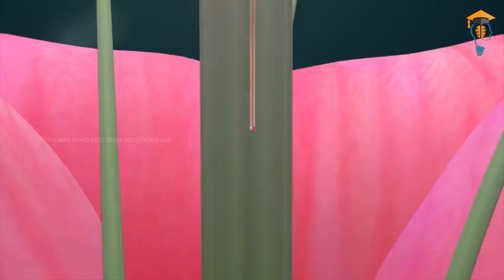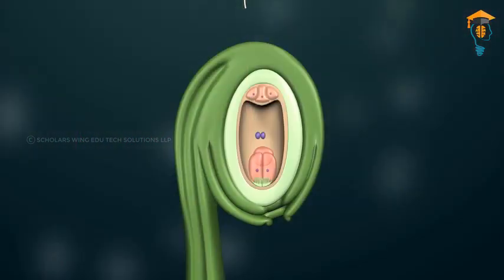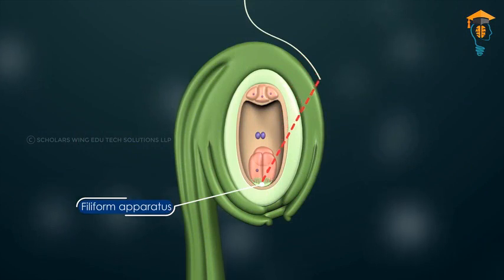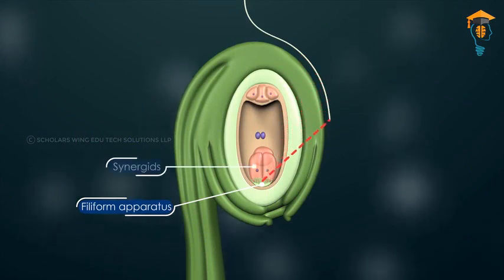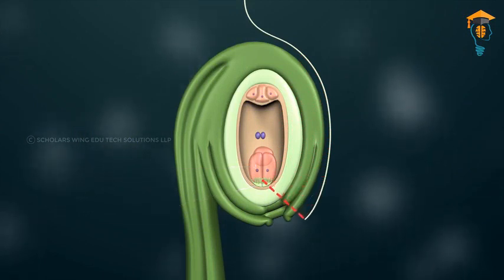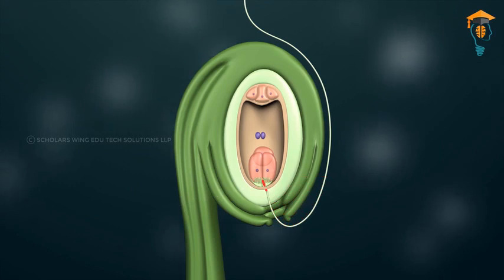The pollen tube elongates and grows through the tissues of the stigma and the style, and ultimately reaches the ovary. It is the filiform apparatus, located at the micropylar end of the synergids, that guides the entry of the pollen tube inside the ovary and simultaneously the ovule.